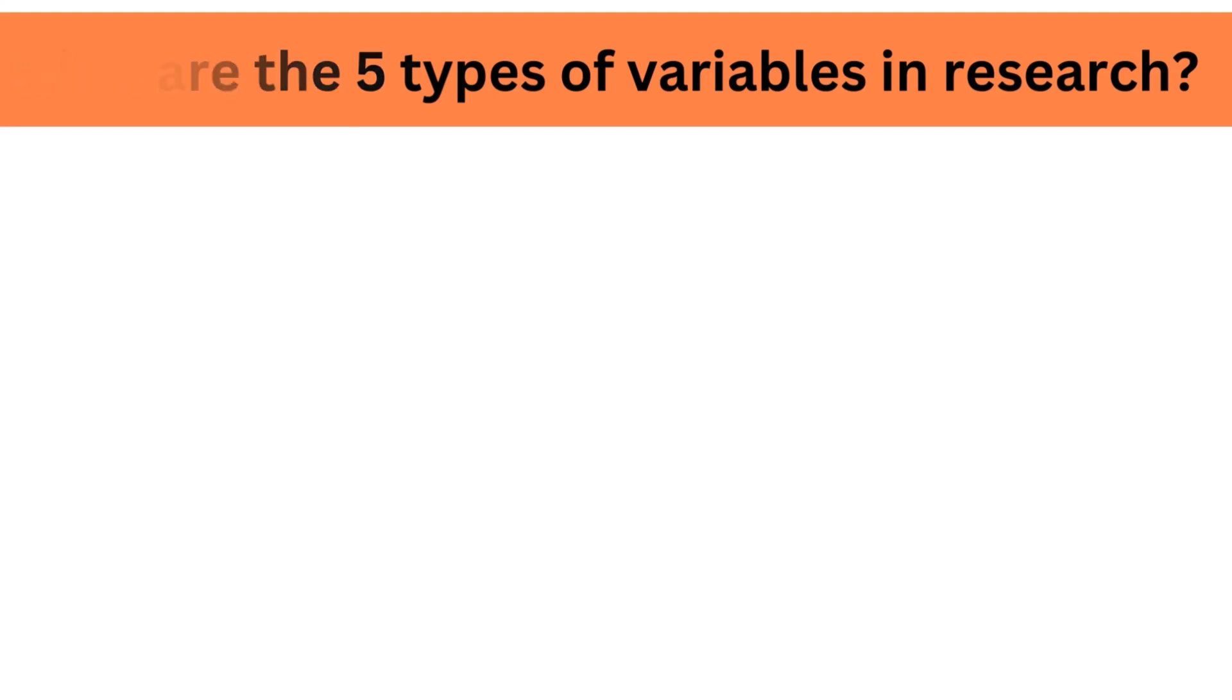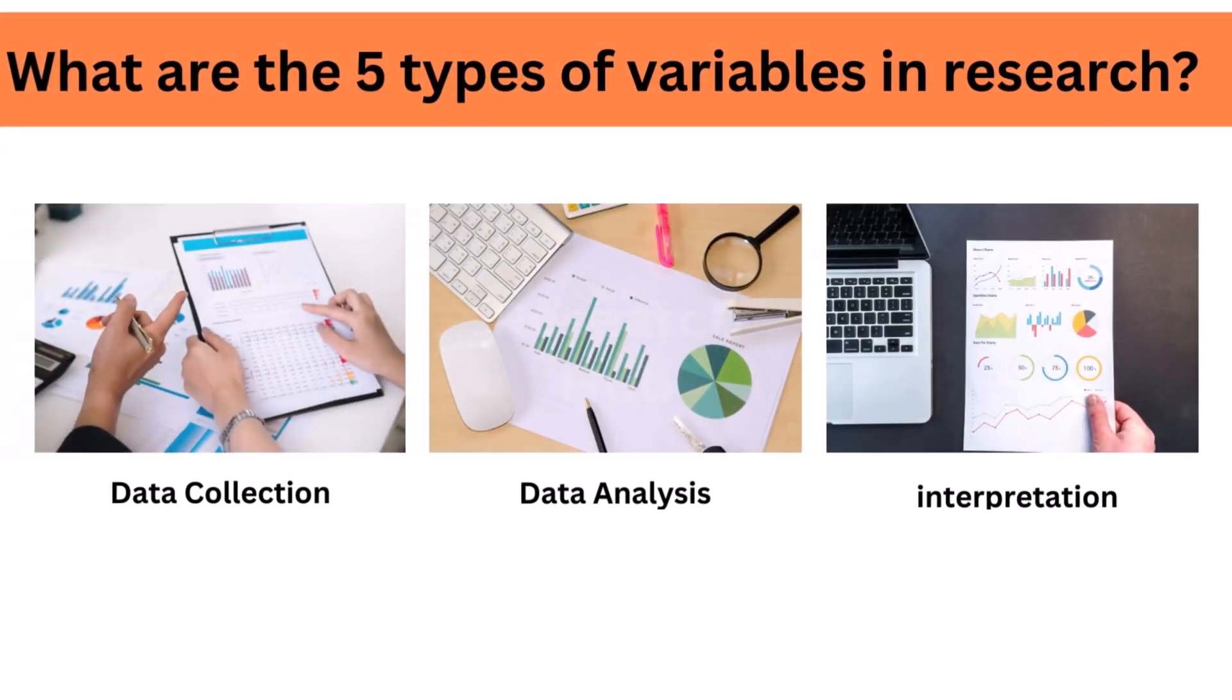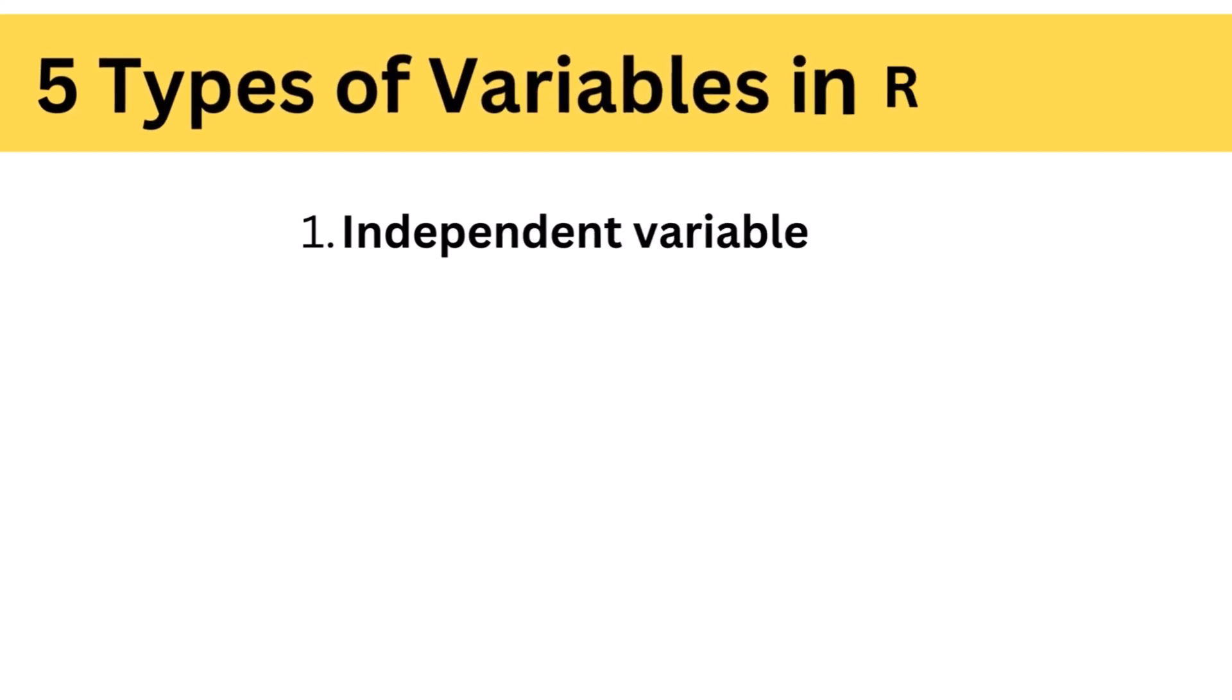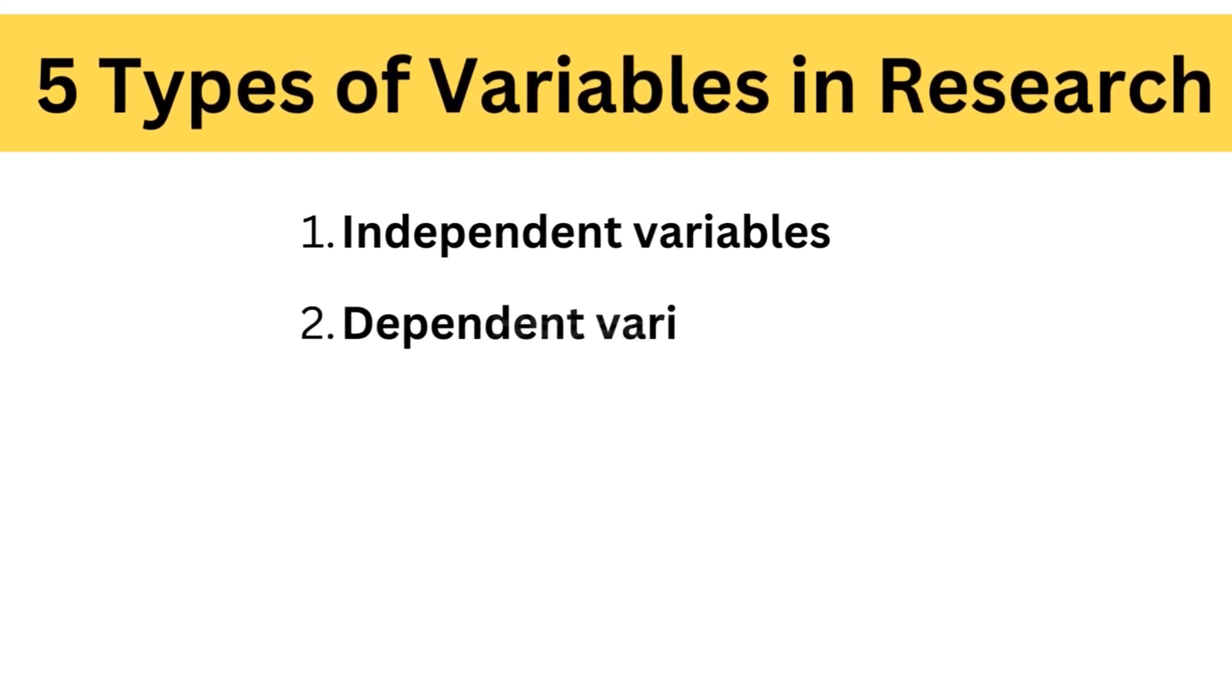What are the five types of variables in research? Variables are crucial components in research, serving as the foundation for data collection, analysis, and interpretation. They are attributes or characteristics that can vary among subjects or over time, and understanding their types is essential for any study.